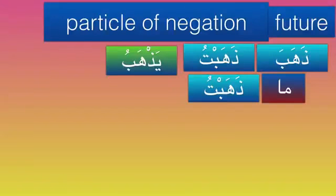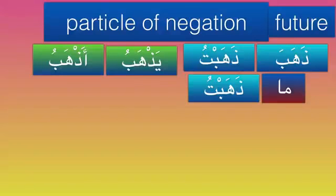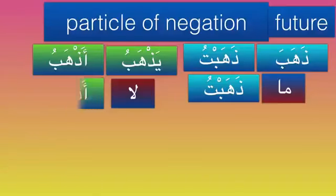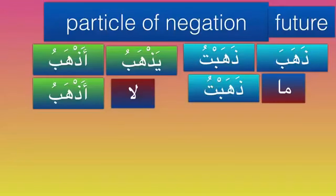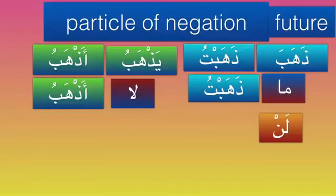If I want to negate a sentence in the present — for example 'yadhabu' means 'he is going', 'adhabu' means 'I am going' — to say 'I am not going' we bring 'la', which is harfa nafia. So 'la nafia': no, I am not going. But if you want to say 'I will not go', which is in the future — if asked 'are you going tomorrow?' and you say no — we bring what is called 'lan'.